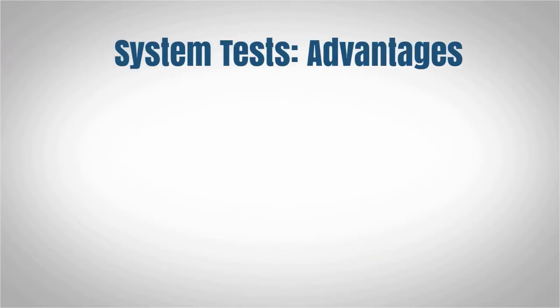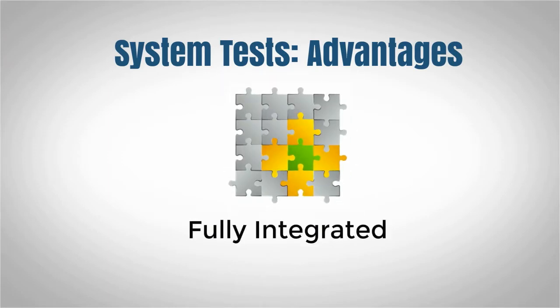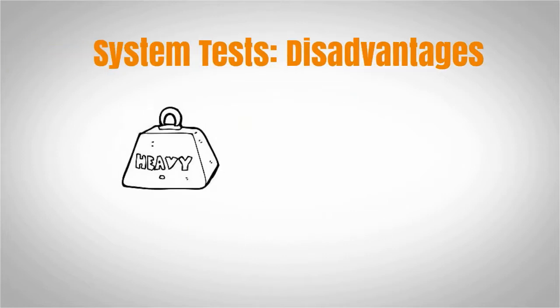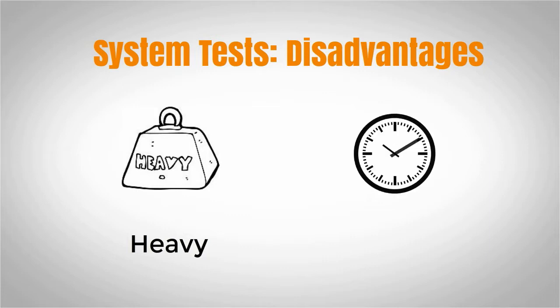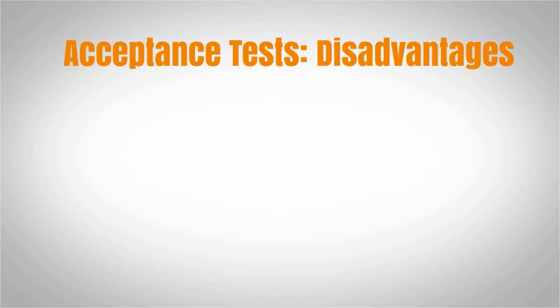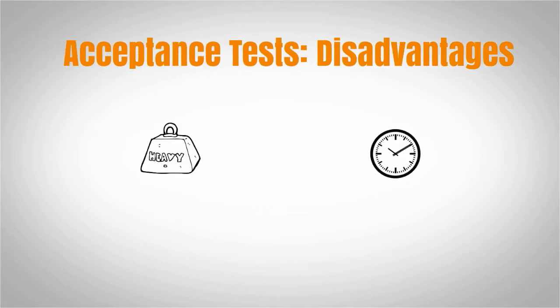System tests give developers the first opportunity to observe a fully integrated software product with external peripheral systems, but they can only be run in a fully integrated environment. This limitation makes these tests unavailable to the developer on their local machine, and these tests tend to be time consuming and are not as easy to repeat as unit and integration tests. Acceptance tests give users the first opportunity to observe the fully integrated software product, and they share all the same disadvantages of system tests — they are slow and difficult to repeat.